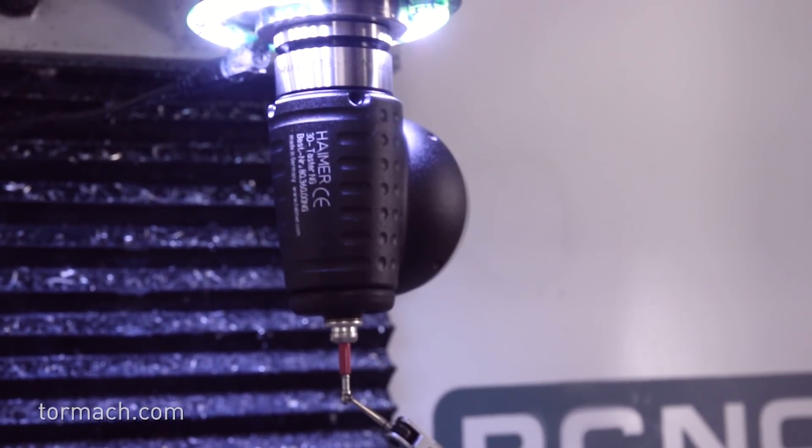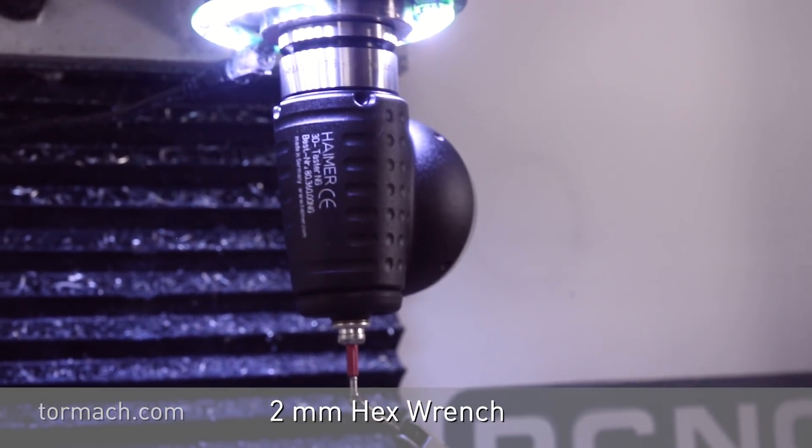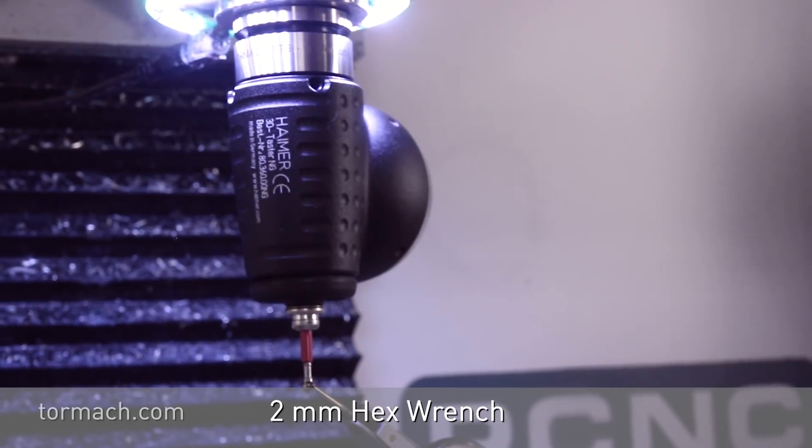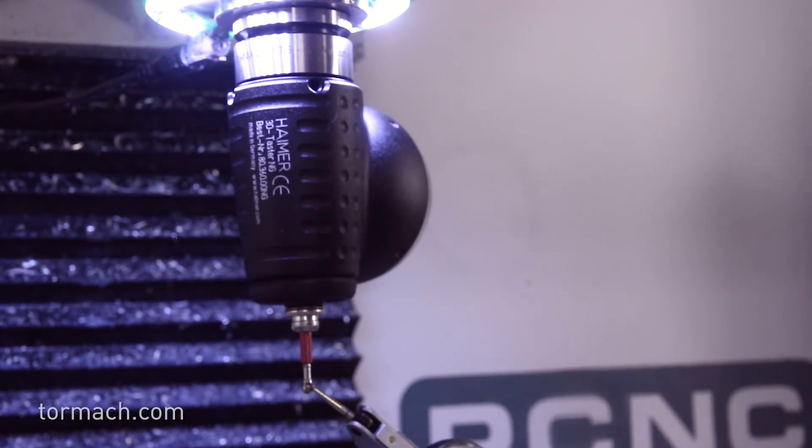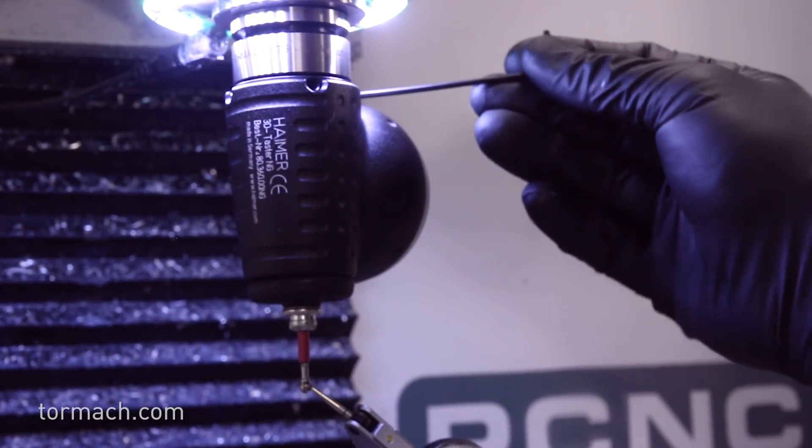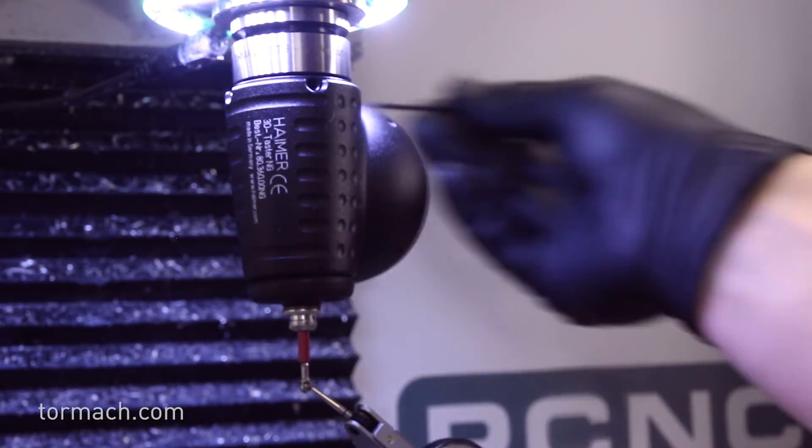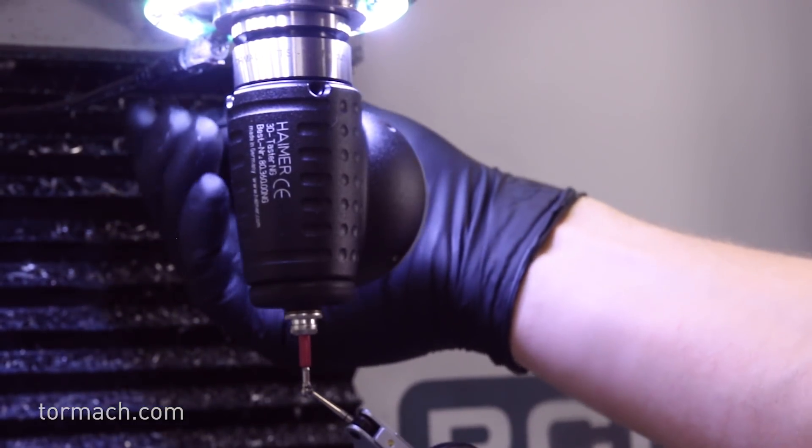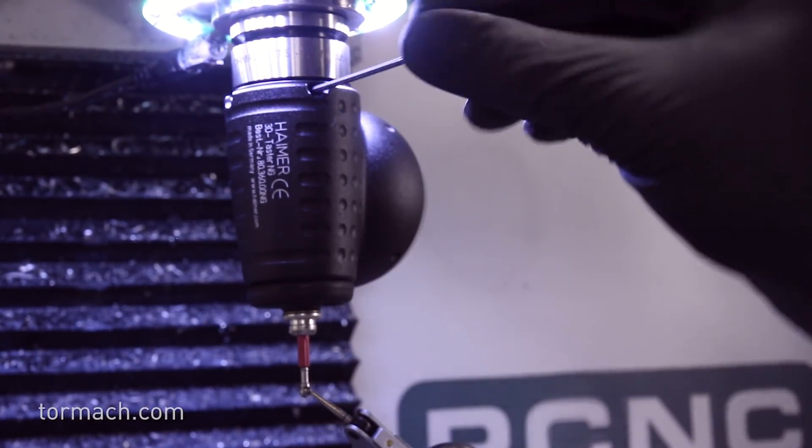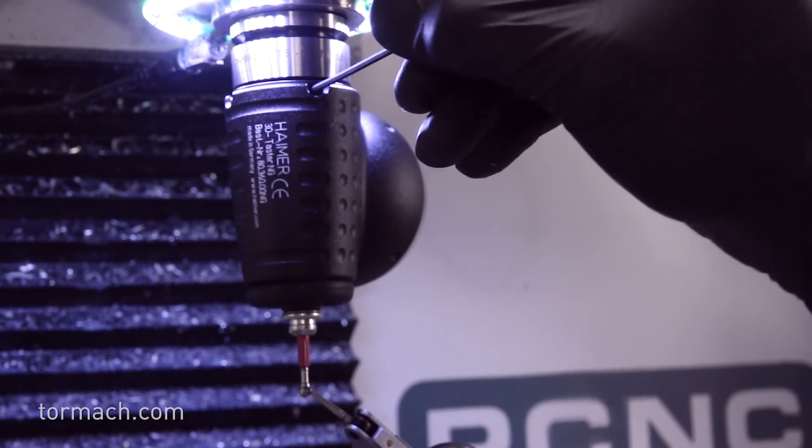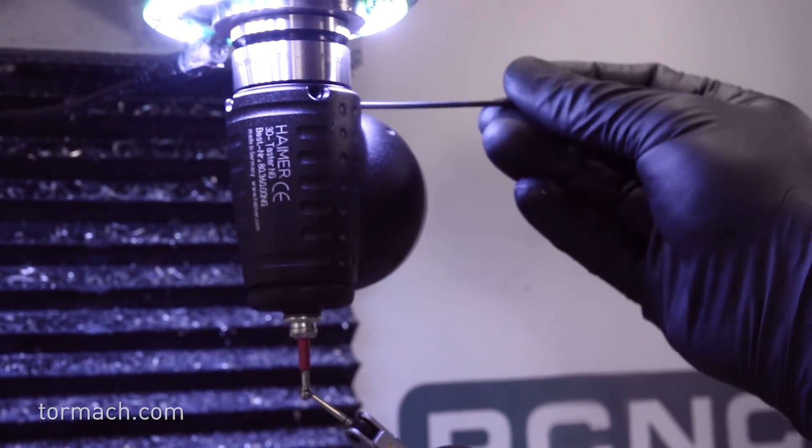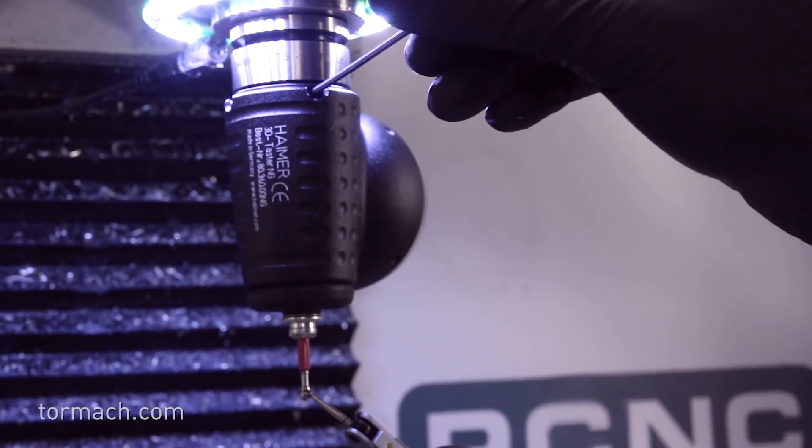So to adjust this we need a two millimeter Allen wrench and you always want to loosen and then tighten when you're making these adjustments. You don't want to over tighten and damage the component. So we'll just lightly loosen this up, barely snug this. We're actually going to crack one of the sides loose as well just so that we can move it a little freer.